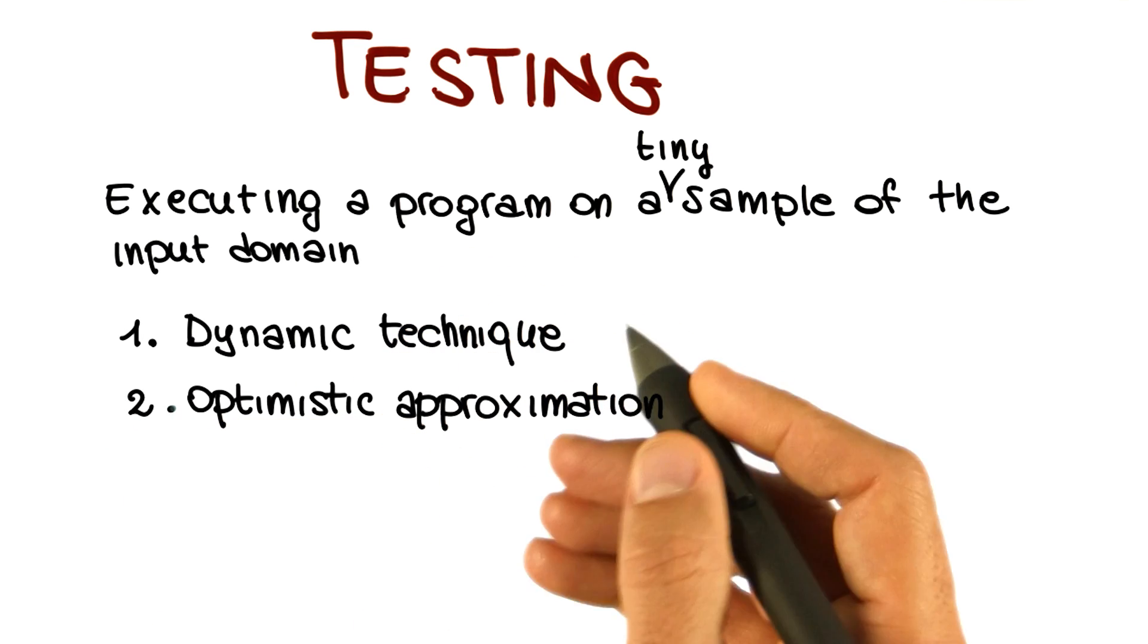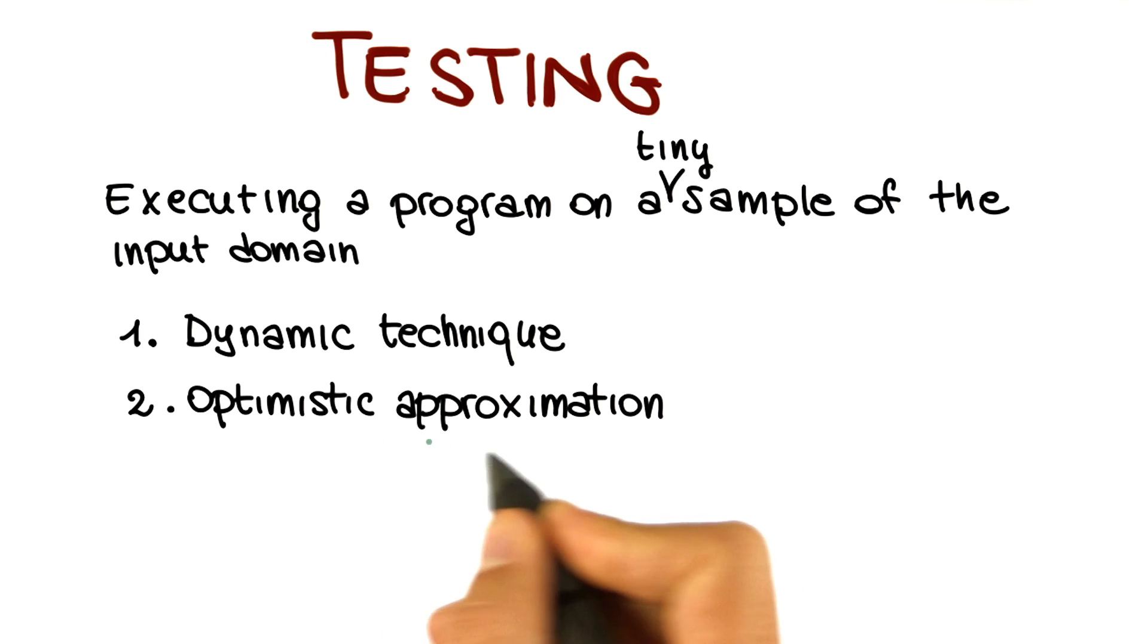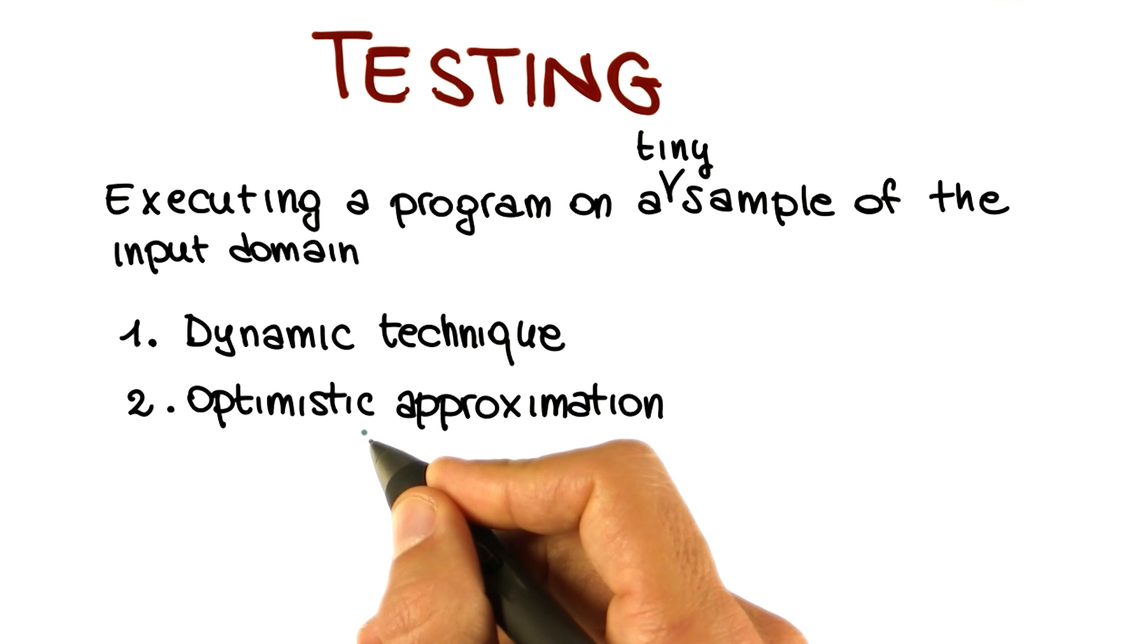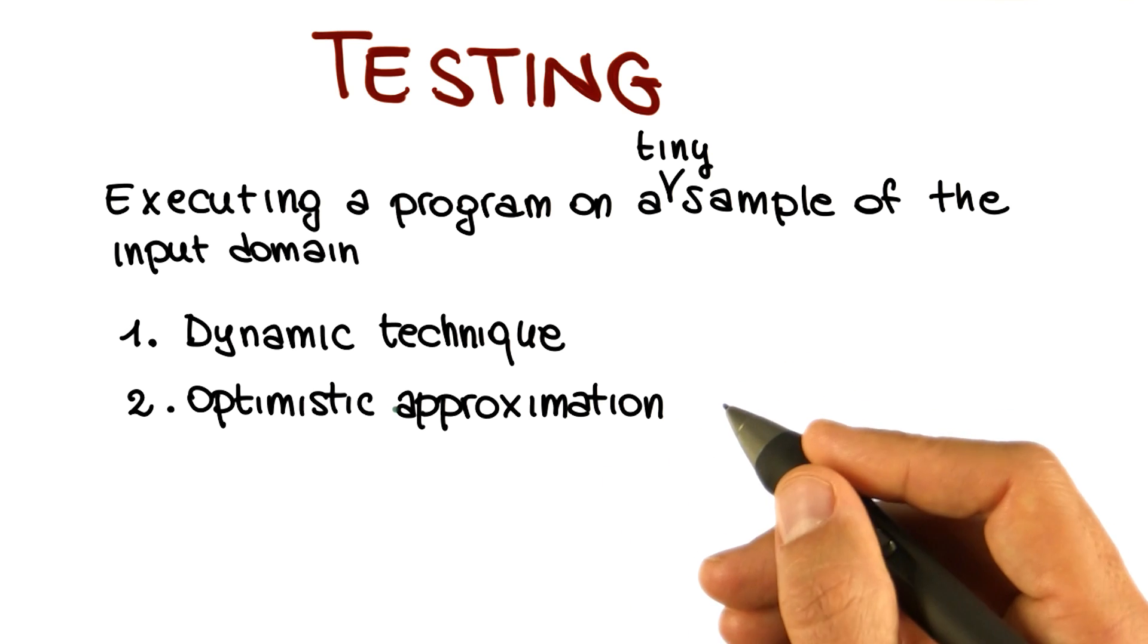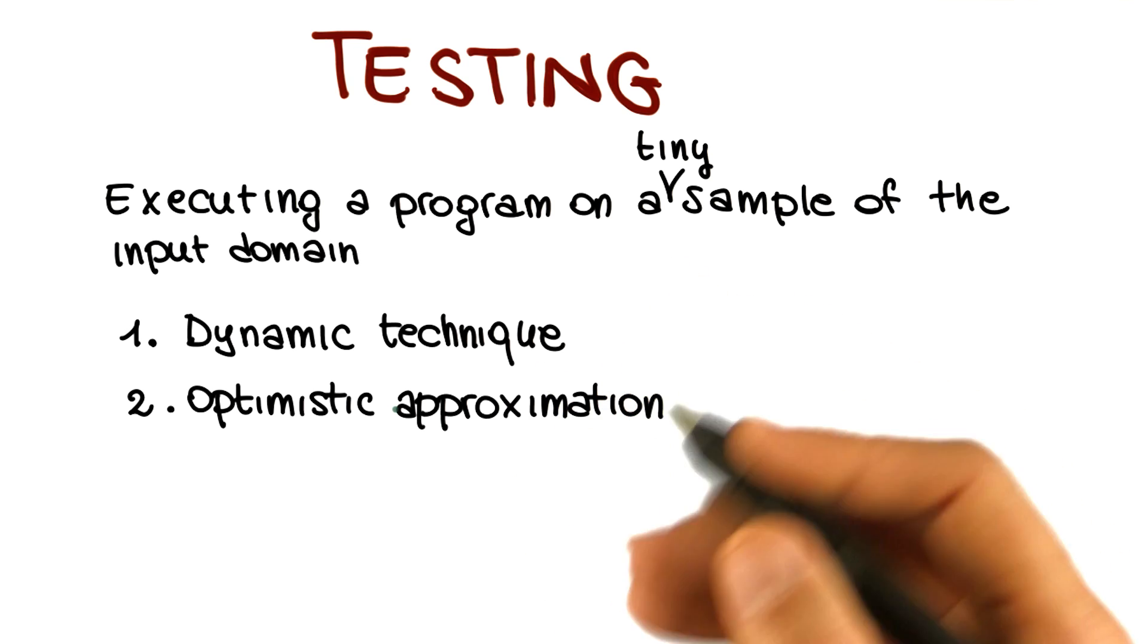The second important point is that testing is an optimistic approximation. What does it mean to be optimistic? It means that the program under test is exercised with a very small subset of all the possible inputs, as we just said.